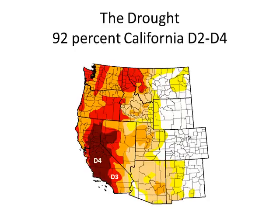Before we get too far ahead of ourselves, we're in the worst drought we've seen — at least the worst four-year drought across California. About 90% of the state is in a form of D2 to D4, basically severe drought all the way to exceptional drought.